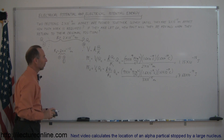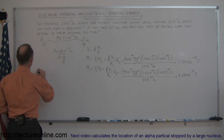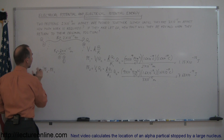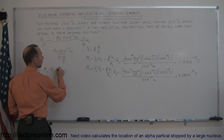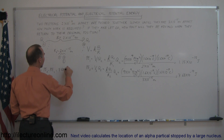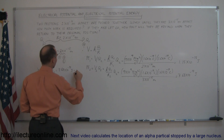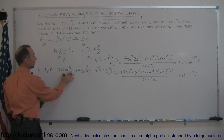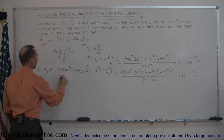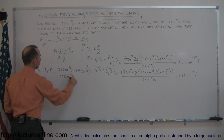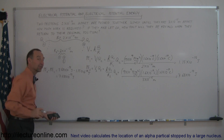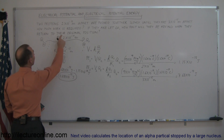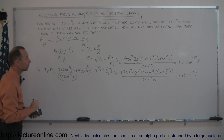So how much work did we have to do to bring the two together? The work is equal to PE2 minus PE1 — the difference between the two potential energies. That is 7.68 times 10 to the minus 14 joules minus 1.15 times 10 to the minus 18 joules, which considering significant figures equals 7.68 times 10 to the minus 14 joules. That's the amount of work done to get the two protons that closely together.